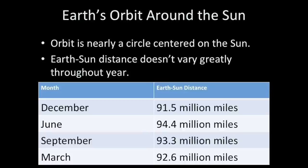Let me show you a table that gives the variation in distance over the course of the year. In December, the Earth is 91.5 million miles from the Sun — that is in fact the closest that we get to the Sun during the year. In June, we're 94.4 million miles away, which is the furthest. In September and March, we're about 93 million miles from the Sun, which is also the average distance.